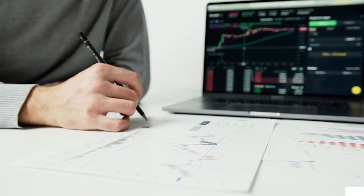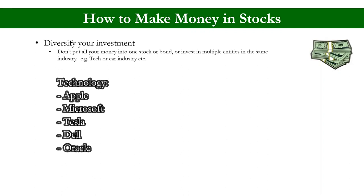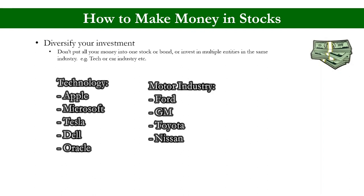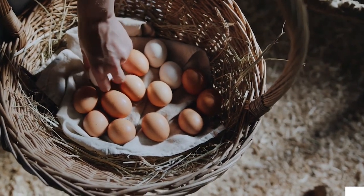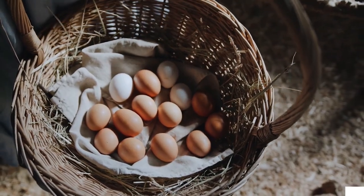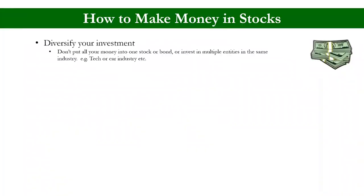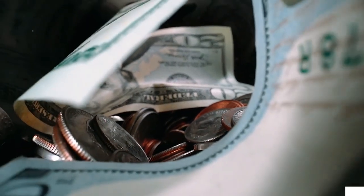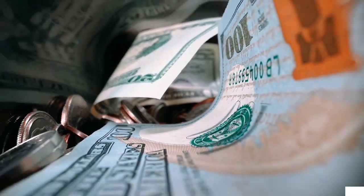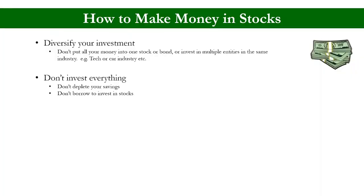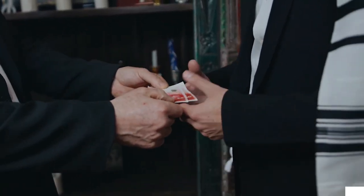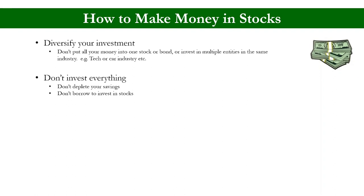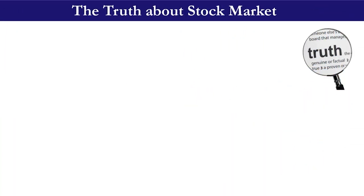Diversify your investments — don't put all your money into one stock or bond, and don't invest in multiple entities in the same industry. As people say, don't put all your eggs in one basket. Invest in different stocks so if one industry goes down you're still saving or making money in another. Last but not least, don't invest everything. If you have ten thousand dollars saved, please don't deplete your entire savings — and of course, don't borrow to invest in stocks. That's not a good idea.